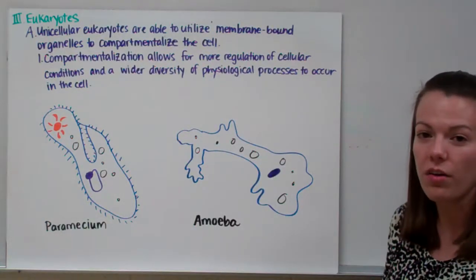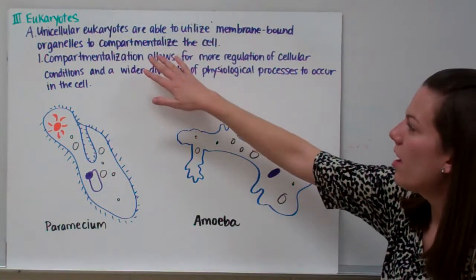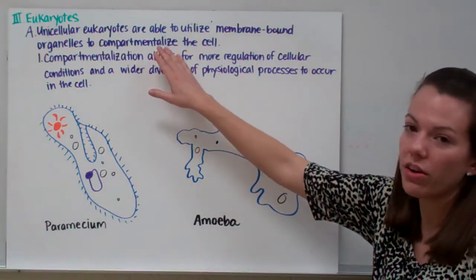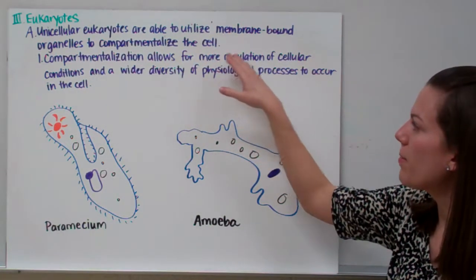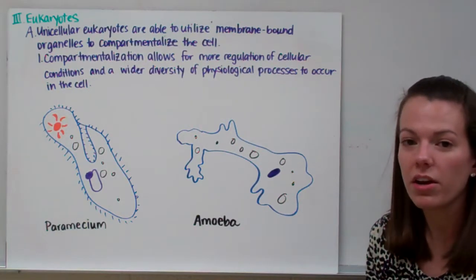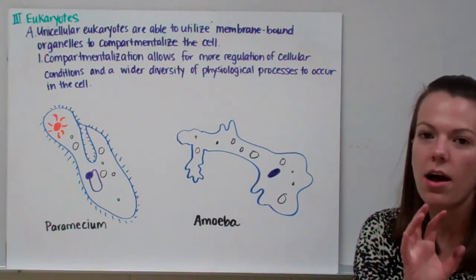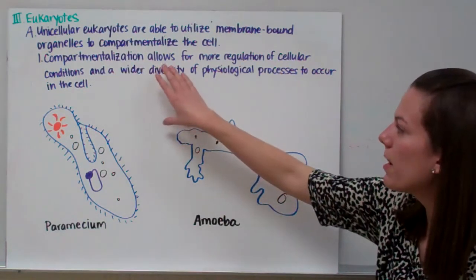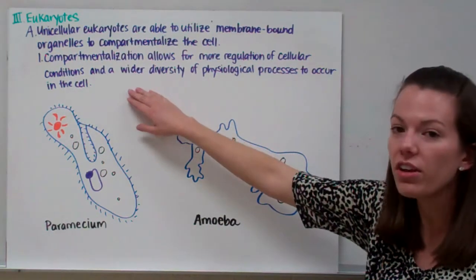Moving on from prokaryotes to eukaryotes: eukaryotes can either be made of one cell or many cells. Unicellular eukaryotes are able to utilize membrane-bound organelles to compartmentalize the cell. Even though they're made of one cell, they have organelles inside, so different parts of the cell can work on different things. This compartmentalization allows for more regulation of cellular conditions.